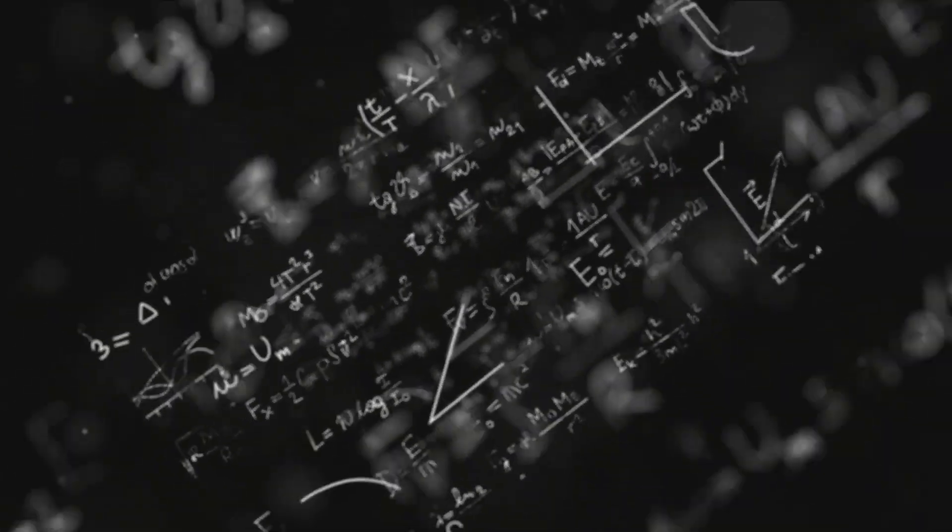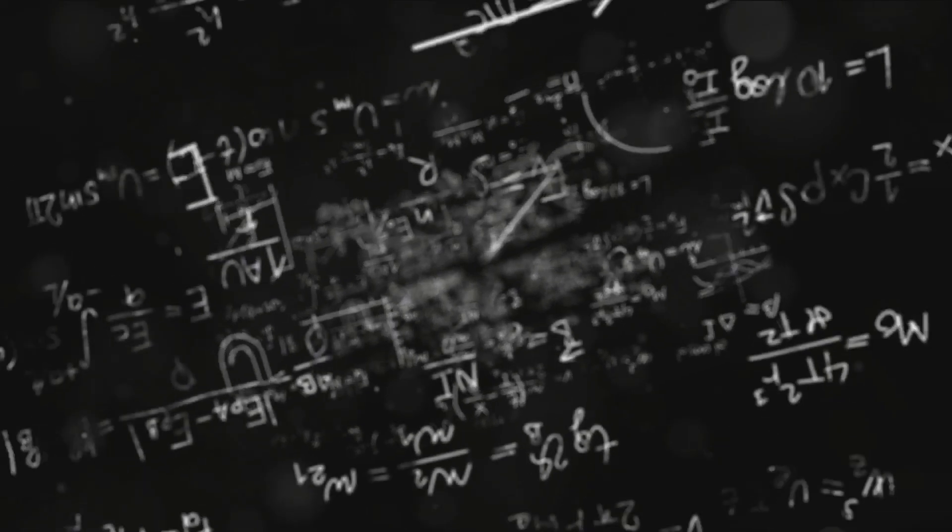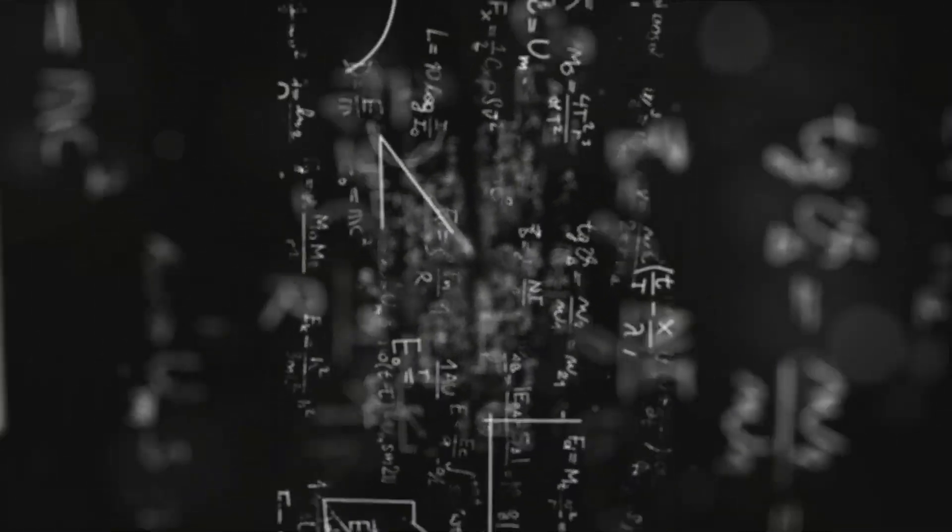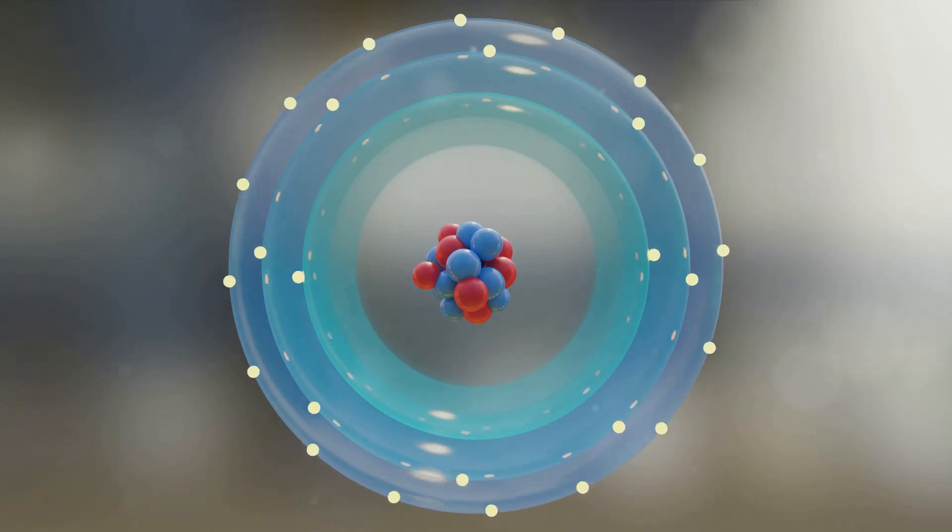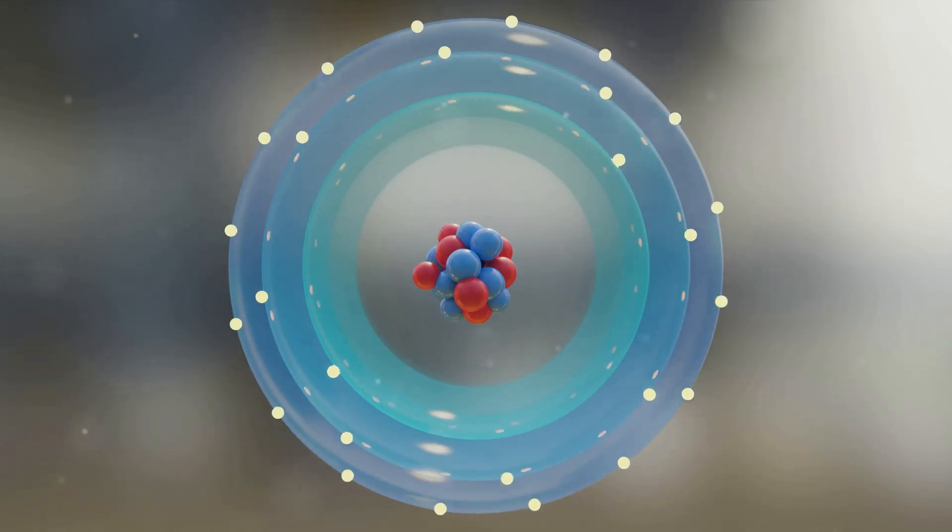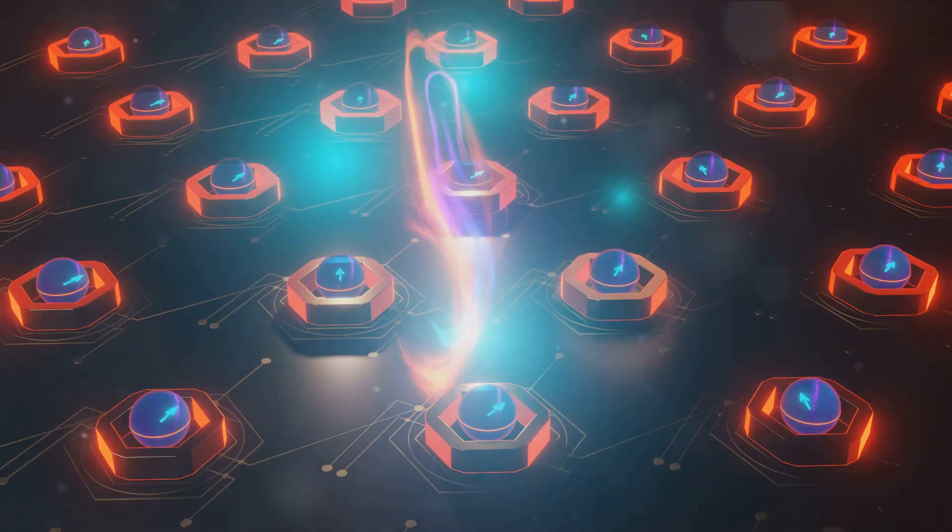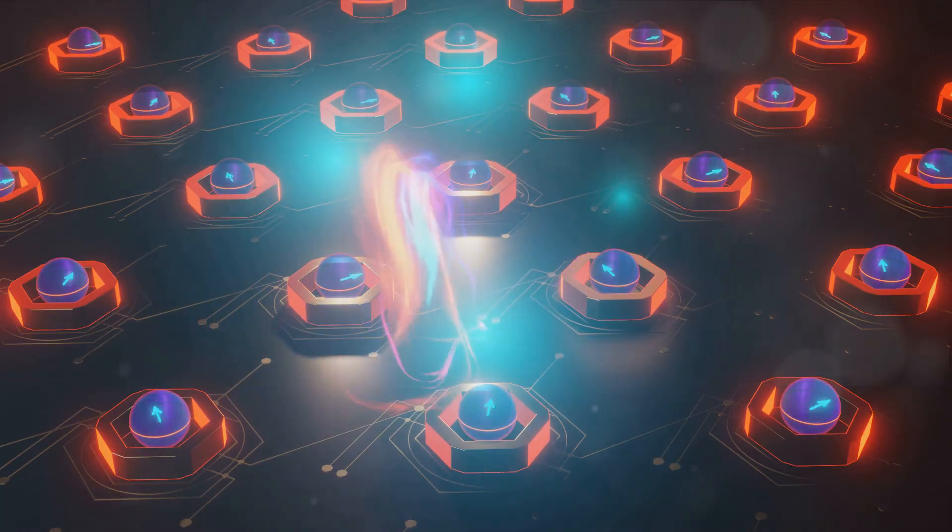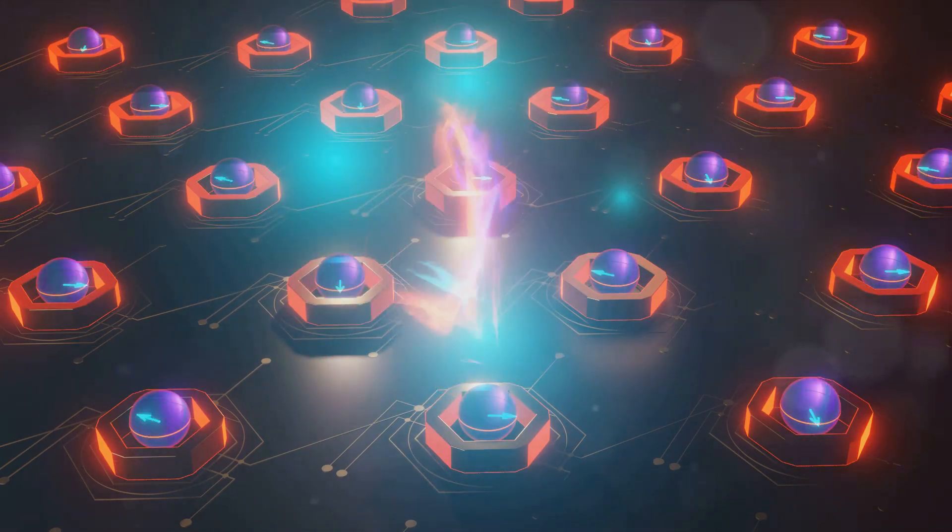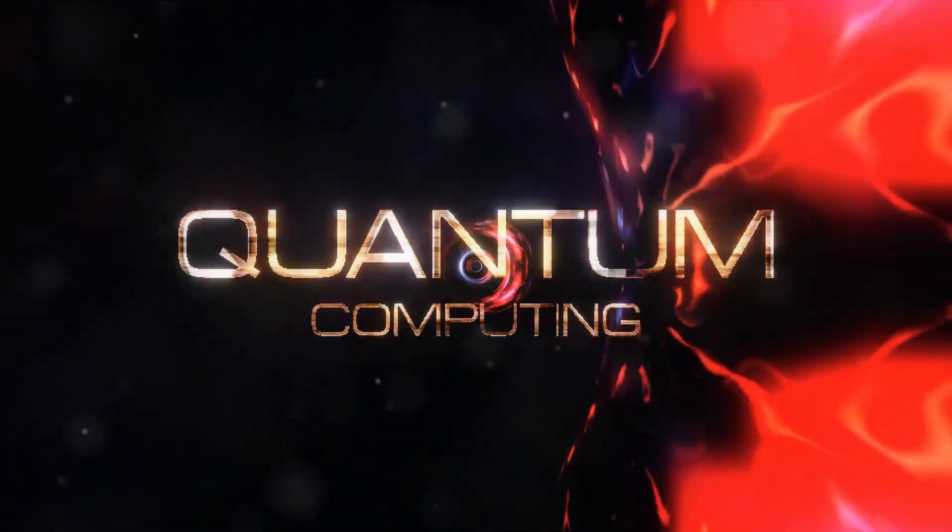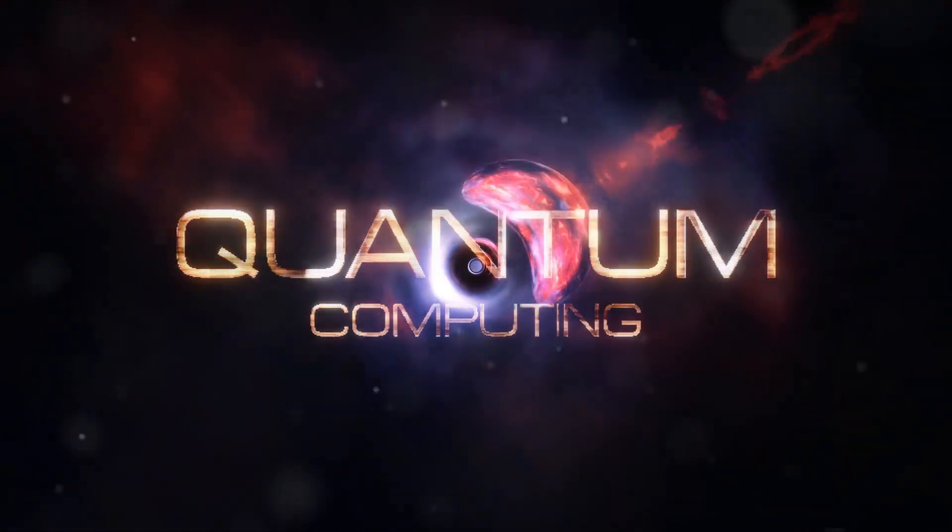Let's delve deeper into the structure of atoms, the fundamental building blocks of matter. Each atom, in its essence, consists of a nucleus at the center, surrounded by a cloud of electrons. The nucleus itself is densely packed with protons and neutrons, each playing a crucial role in the properties of an atom. Understanding these tiny powerhouses is the first step towards understanding the bewildering complexity of the quantum realm. So let's take a step further into the microscopic world and continue our exciting journey into the quantum realm.